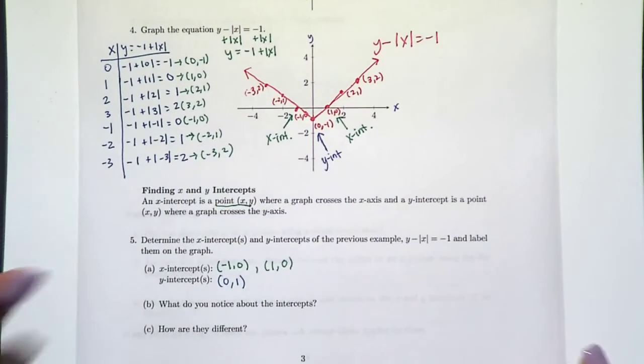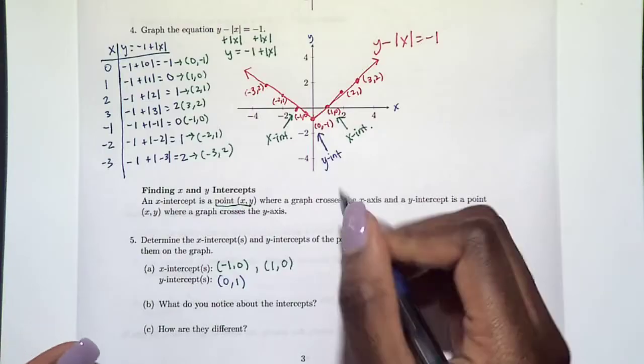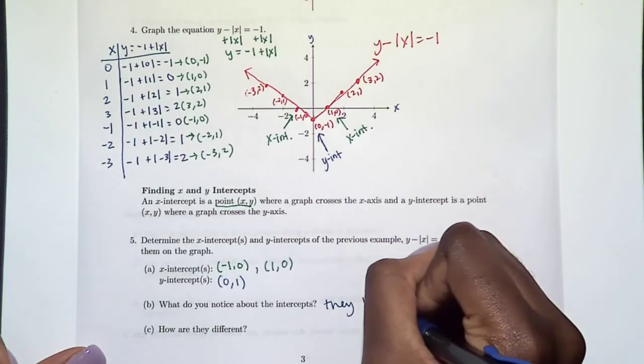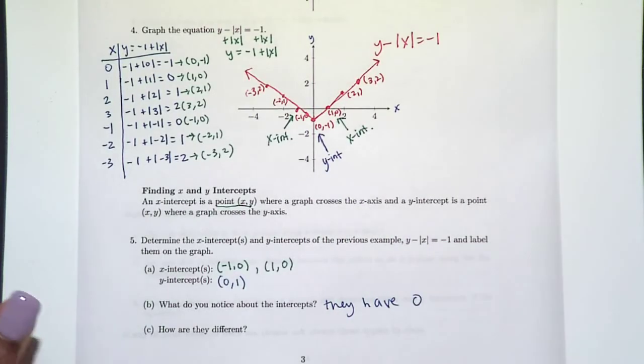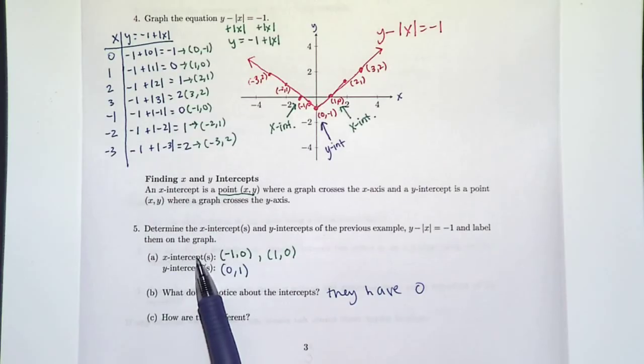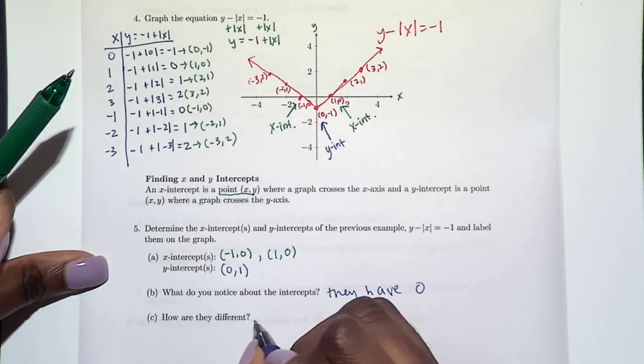So my question is, what do you notice about these intercepts? The main thing that I noticed is they have zeros in them. I'm going to write that down. How are they different? Well, it's the location of the zeros. X-intercepts have a zero in the y position, and y-intercepts have a zero in the x position.